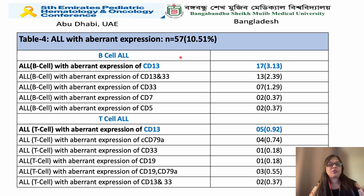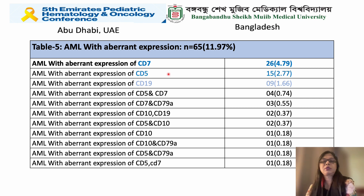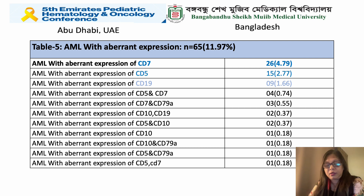Regarding aberrant expression, in B-cell ALL and T-cell ALL the most common aberrant expression was CD13, followed by CD33. For AML with aberrant expression, the most common was with CD7 (T-cell marker) in 26 cases (4.79%), followed by CD5 and CD19 respectively.